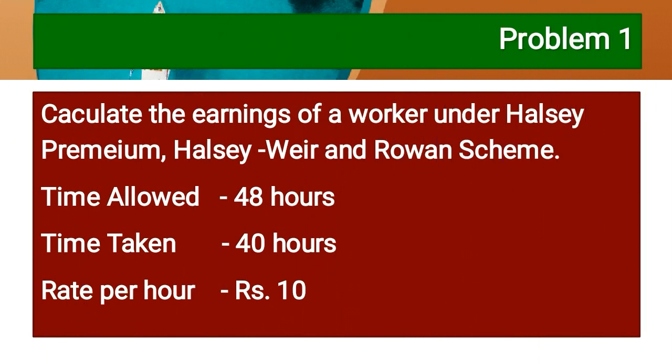Problem number 1: Calculate the earnings of a worker under Halsey Premium, Halsey Weir, and Rowan Scheme. Time allowed is 48 hours. Actual time taken is 40 hours. Rate per hour is Rs. 10.